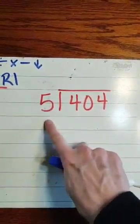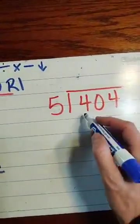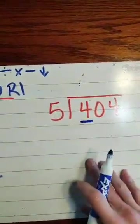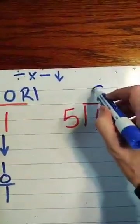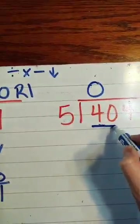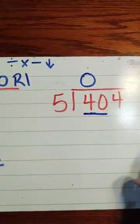So here we are, 404 divided by 5. Will 5 go into 4? No, so we put a 0 right above that 4 and we pull another number in.